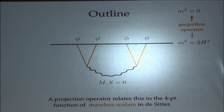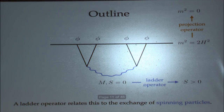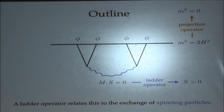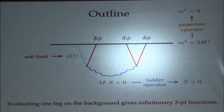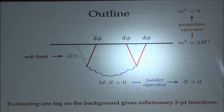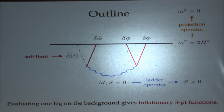We can change the mass of the external fields by acting with a simple derivative operator on this object. We can also act with another set of differential operators that will change the spin of the exchange particle and generate an infinite tower of massive particles with arbitrary spin, following from just a differential operation on the fundamental object. Finally, we can take one of the legs, evaluate it on the background, slightly perturb its mass dimension to make it a nearly massless field with a slow roll correction, and that gives us inflationary three-point functions. For example, Juan's famous slow roll three-point function follows from this if you take the internal particle to be massless spin zero, or exchange a graviton with spin two.